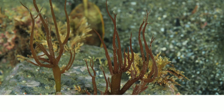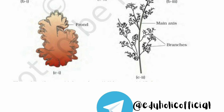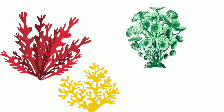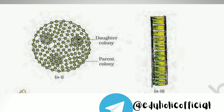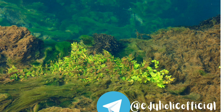Liverworts grow usually in moist shady habitats such as banks of streams, marshy ground, damp soil, bark of trees, and deep in the woods. The plant body of a liverwort is thaloid, for example Marchantia. The thallus is dorsiventral and closely appressed to the substrate. The leafy members have tiny leaf-like appendages in two rows on stem-like structures. Asexual reproduction in liverworts takes place by fragmentation of thalli or by formation of specialized structures called gemmae.